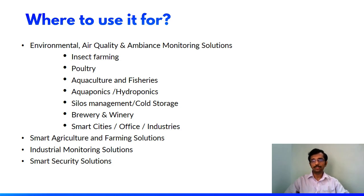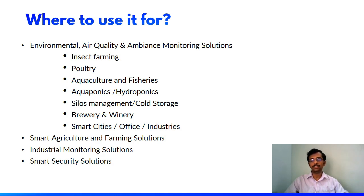Here I have listed out a few of the use cases — environmental monitoring, air quality monitoring, and ambience monitoring solutions. Environmental monitoring is very important in the current scenario in places like smart offices, smart cities, and smart industry applications. Also in insect farming, poultry, aquaculture and fisheries, aquaponics and hydroponics, cold storage management, and breweries and wineries. In all these places, temperature and humidity monitoring is very important.